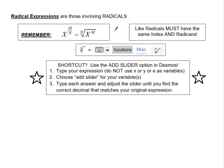On our Desmos calculator, if you want to pull up a cube root, or a fourth root, or any type of root, we will pull up the keypad, go to functions, then miscellaneous, and call up the nth root symbol.